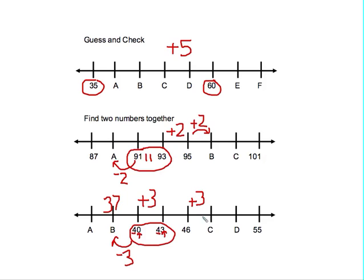46 plus 3 is going to be 49, plus another 3 is going to give me my 52. Indeed, D is where I'd find 52.